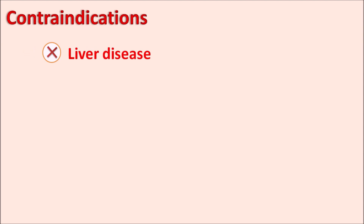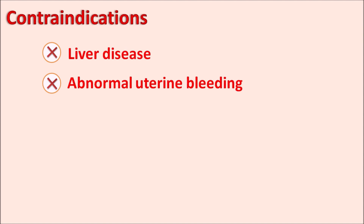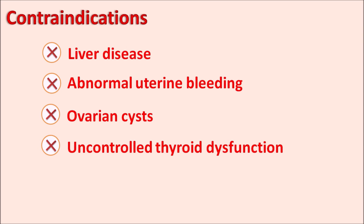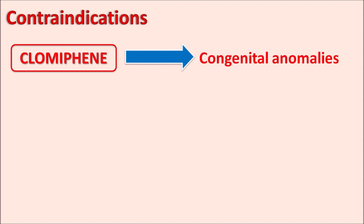Contraindications of clomiphene include liver disease, abnormal uterine bleeding (as clomiphene can increase uterine bleeding), and ovarian cysts not due to PCOS, as cyst formation can cause ovarian enlargement and further complications. It is also contraindicated in women with uncontrolled thyroid dysfunction, known hypersensitivity to the drug, and in pregnant women, as it can produce congenital anomalies and fetal abnormalities.